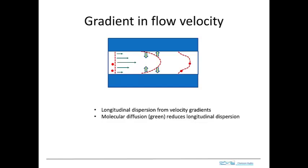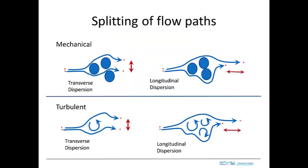That's happening in laminar flow. In turbulent flow we have a somewhat different situation. Here's the case for dispersion due to splitting of flow paths — this is the mechanical process where two molecules go along paths around, say, a solid grain, and then downstream they're split apart.